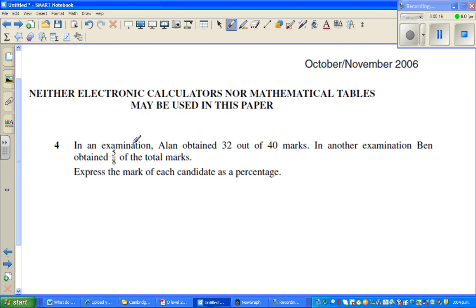Let me do one more question. In an examination, Allen scored 32 out of 40 marks. In another examination, Ben obtained 5 eighths of the total mark. Express the marks of each candidate as a percentage. So percentage means out of 100. Per cent. Out of 100. Cent means 100. Per is out of.